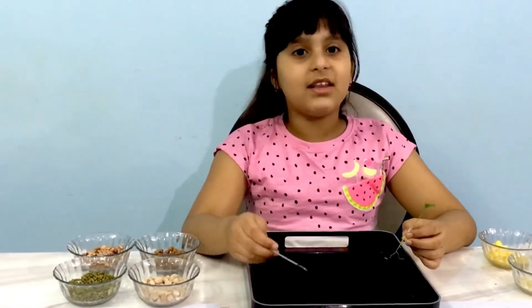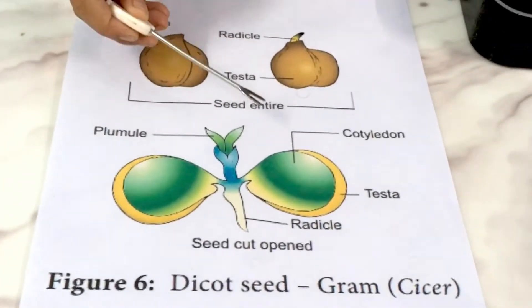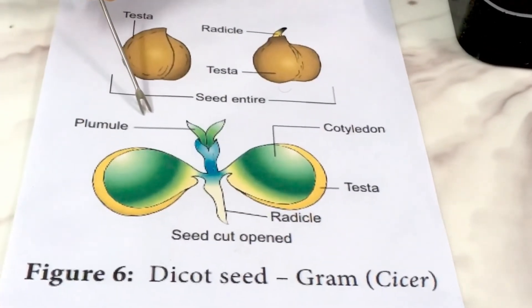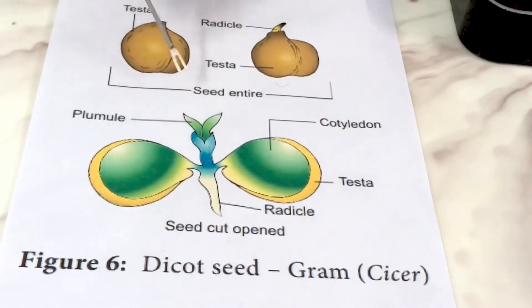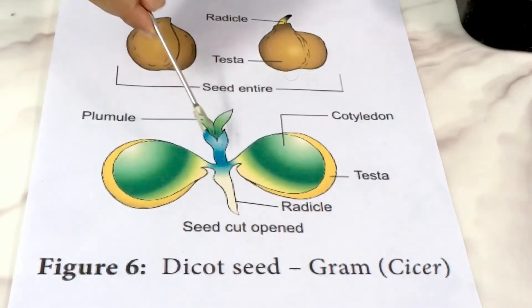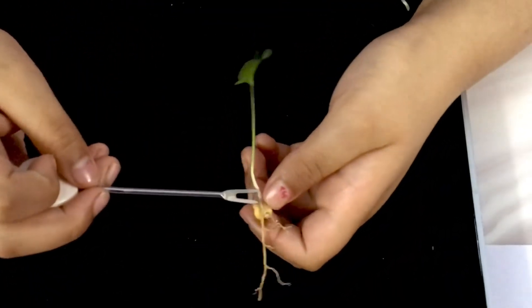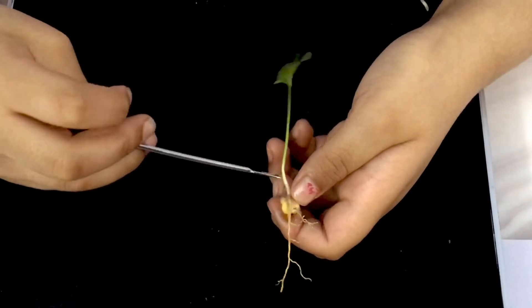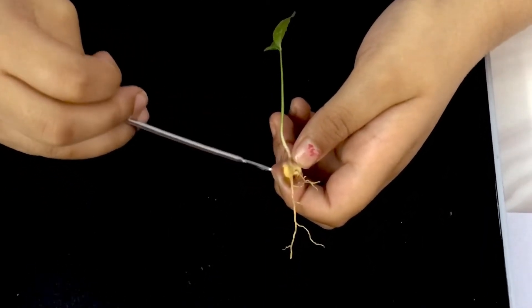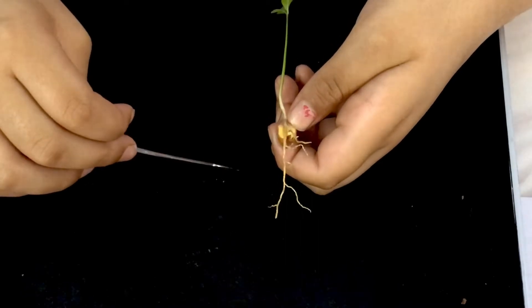If we sow the seed in the soil, it gets developed as the baby plant which is also known as the embryo. The upper part of the embryo is known as the plumule, which later on gets developed as the shoot system of the plant, and the lower part is known as the radicle, which later on gets developed as the root system of the plant. This is the embryo of the plant — this is the shoot system developed from the plumule, and this is the root system developed from the radicle.